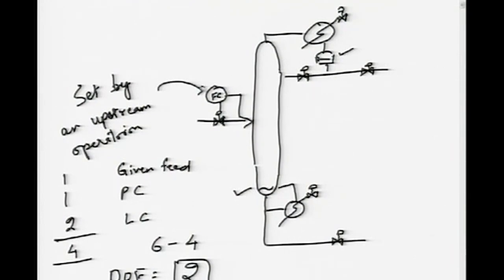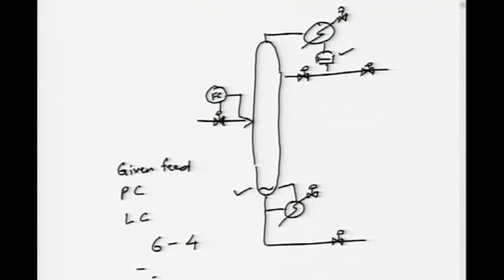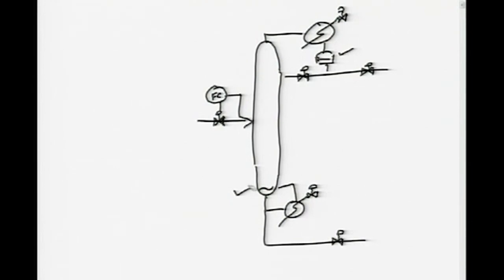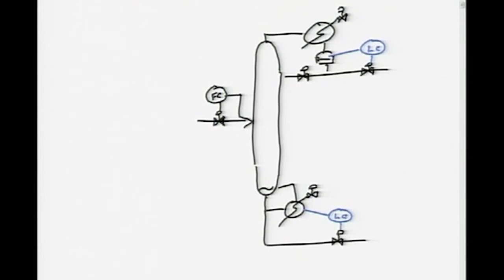Given this degrees of freedom of two, the operator is free to set two things to get the separation that he wants. Depending on how the level controllers are set, the level controller may go this way. The pressure controller typically always uses cooling rate. That leaves the operator to set the reflux, called L, and the reboiler duty, called Q. This is the LQ structure.